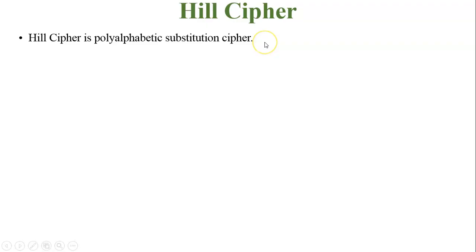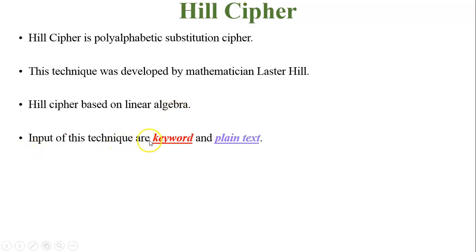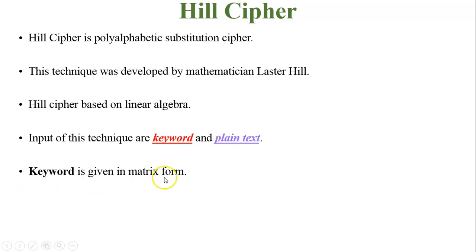Hill cipher is a poly-alphabetic substitution cipher because a character is replaced by another character, and poly-alphabetic means multiple letters are used — not a single letter from the plain text and one letter from the key matrix. This technique was developed by mathematician Lester Hill. Hill cipher is based on linear algebra. The inputs are a keyword given in matrix form and the plain text, which must be converted into matrix form.